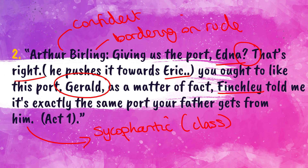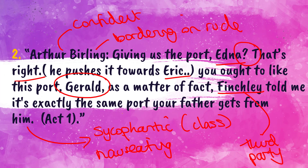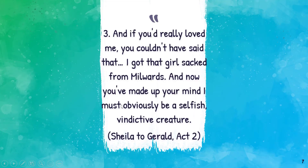Arthur Birling seems to be trying to get Gerald on side - there's something a bit sycophantic here. A sycophant is essentially a suck-up. It's all to do with class: Gerald Croft is upper class, Arthur Birling is middle class. Linked to morality, this behavior seems borderline inappropriate. There's a line between making your guest comfortable and being a little bit nauseating. He's had to go to a third party to find out what the Crofts drink and then buy it. You can link that back to morality and also to context and the class system.